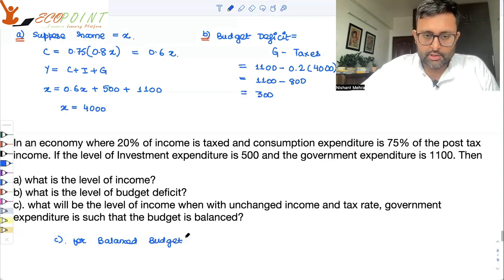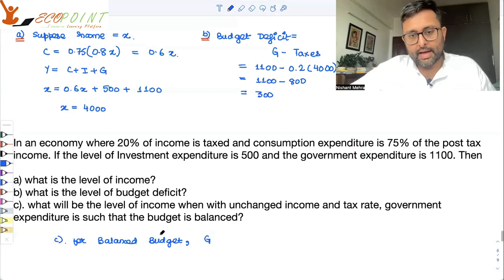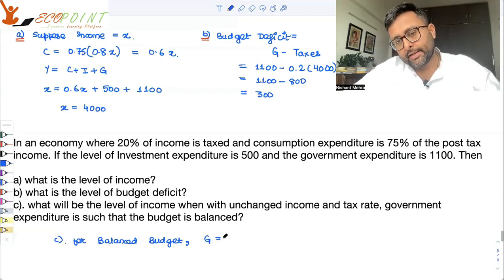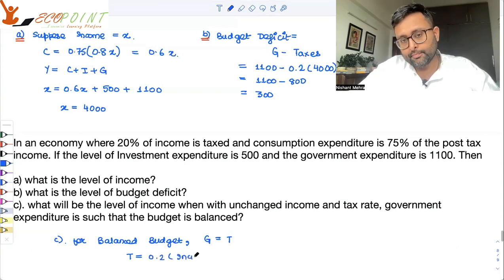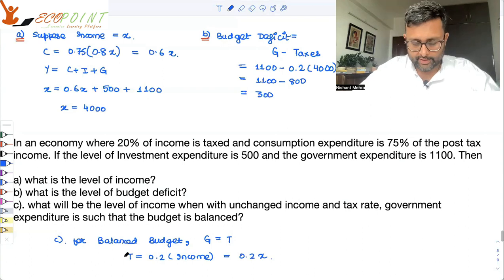For balanced budget, government's expenditure is equal to government's income. Government's income is what? You need to find out that level of income. So, government's income is 20% of the income. So, we will write it like 20% of X. Fair enough.